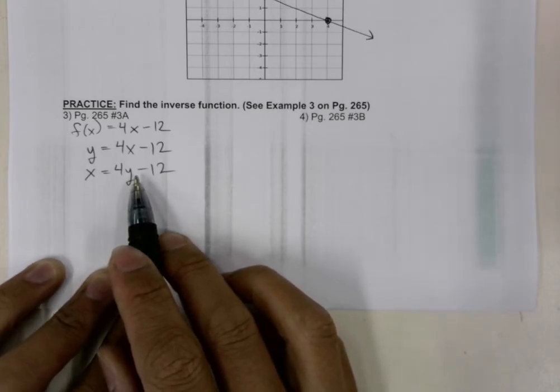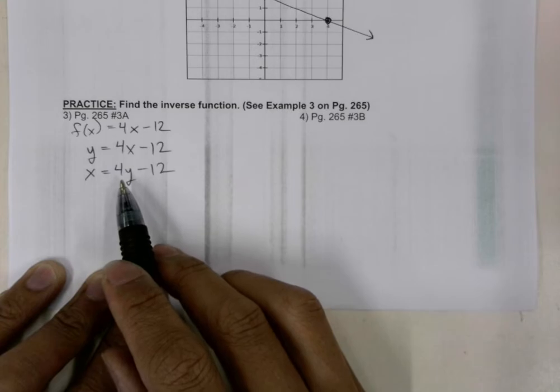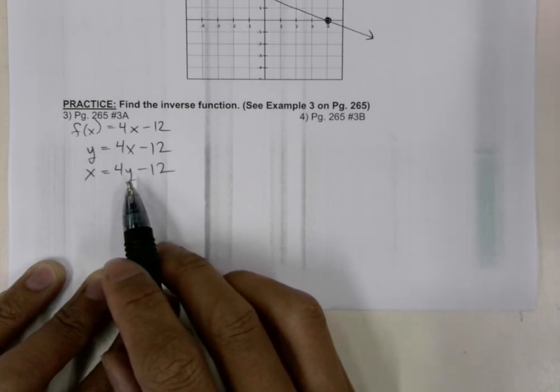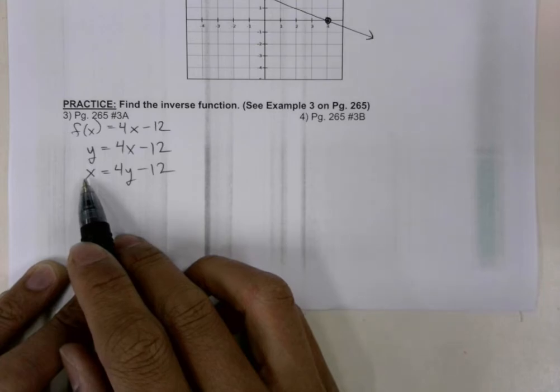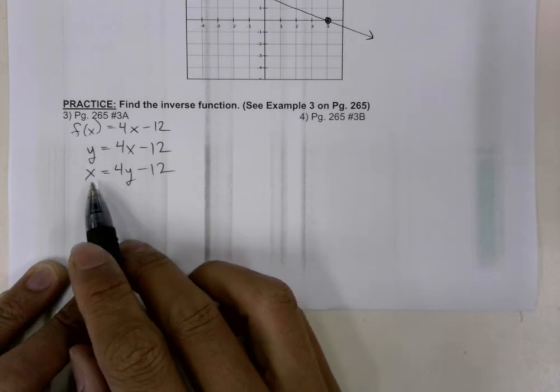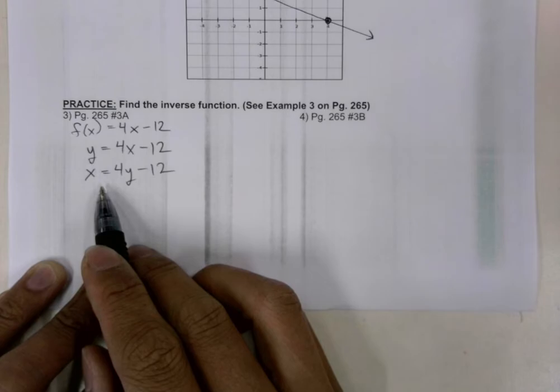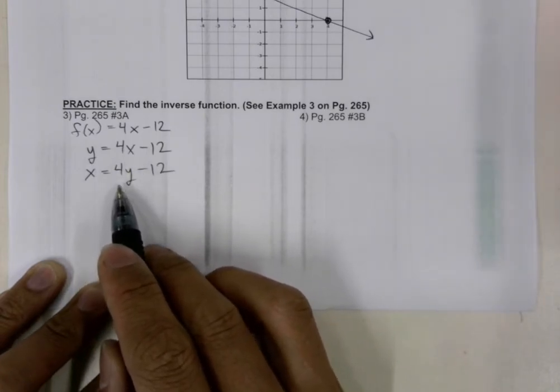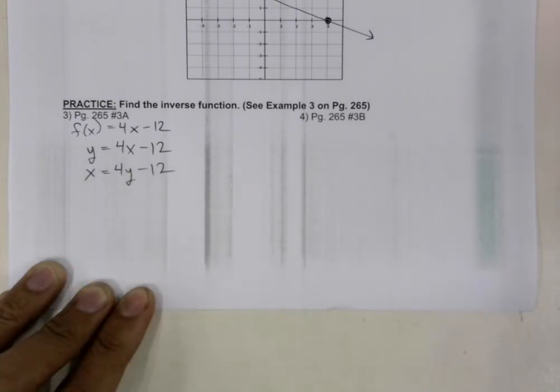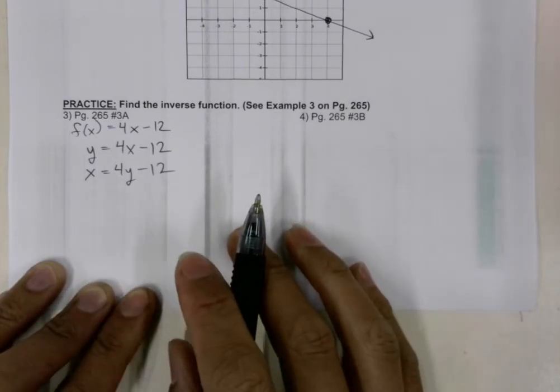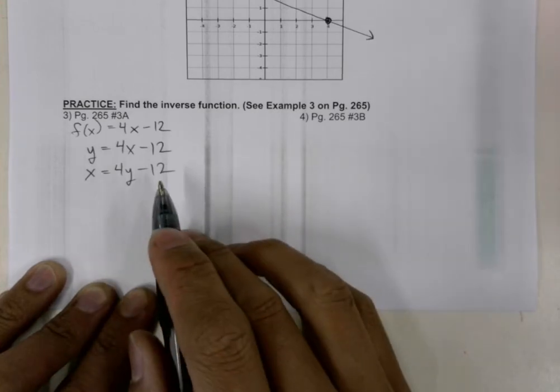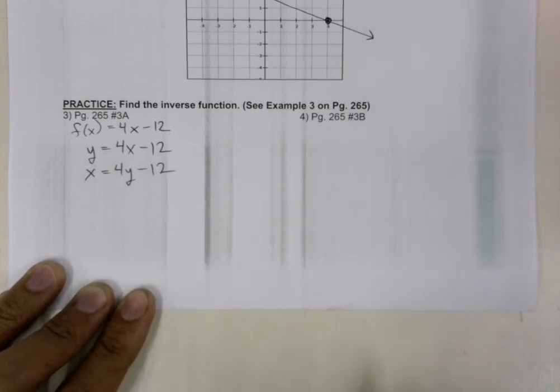What we're going to do is put the function in slope-intercept form with y all alone on one side of the equal sign and the term with the x on the other side of the equal sign along with our y-intercept.